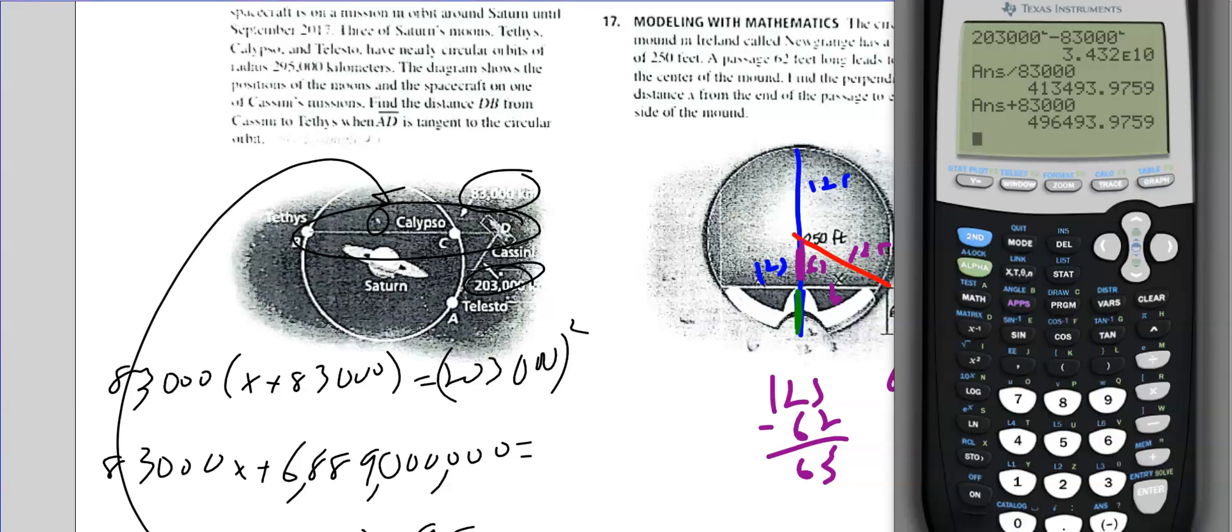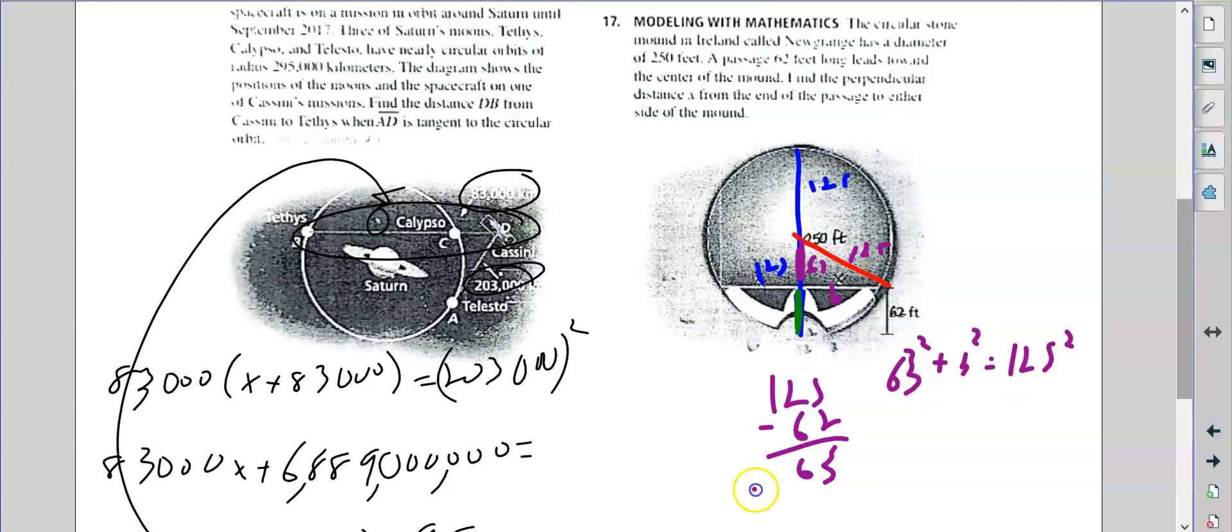So again, we can let our calculator do the heavy lifting for us. 125 squared. And then we're going to subtract the 63 squared. And that gives us 11,656. And then you just square root that. You get 107.9 feet. And that's it. There we go.